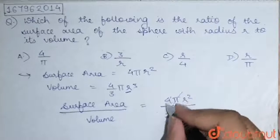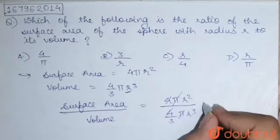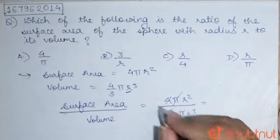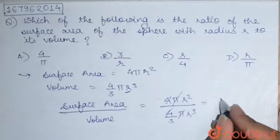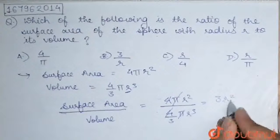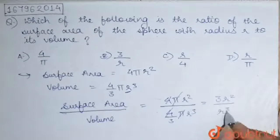Now, pi and pi will cancel. 4 and 4 will also cancel. This 3 will go up in the numerator. And it will reduce to 3 r square upon r cube.